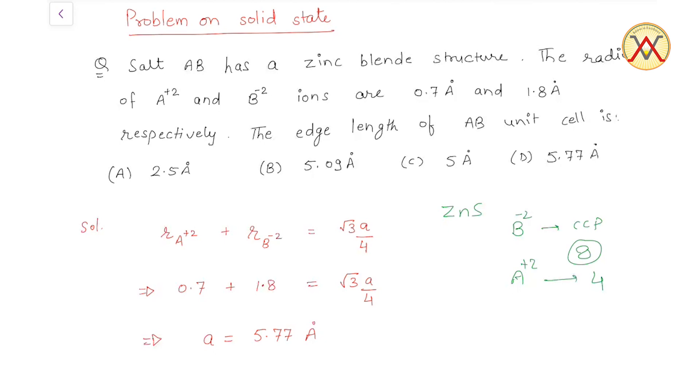The tetrahedral void is at a distance of root 3 a by 4 from the corner. That means the minimum distance between the centers of positive ion and negative ion will be root 3 a by 4. So radius of A²⁺ plus radius of B²⁻ equals root 3 a by 4.